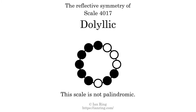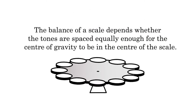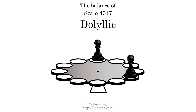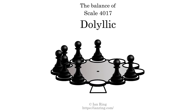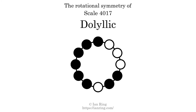This scale has no reflective symmetry. This scale has a different pattern of intervals ascending and descending, so it is not palindromic. This scale has no ridgetones and is not balanced. The inverse of a scale is a mirror image — it is what you get when the sequence of intervals is reversed. The inverse of this scale is scale 447, also known as Thiophilic. This scale is chiral; it cannot transform into its inverse by rotational transformation. This scale has no rotational symmetry.